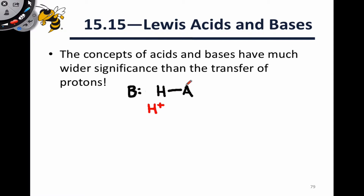In any event, to show the transfer of a proton, what we can show is this covalent bond that's already polarized towards the A atom actually going completely to the A atom, leaving the hydrogen with no electrons and leaving it as H+, and simultaneously the lone pair on B coming and picking up this proton. In other words, the two electrons in this B group are forming a bond to H.